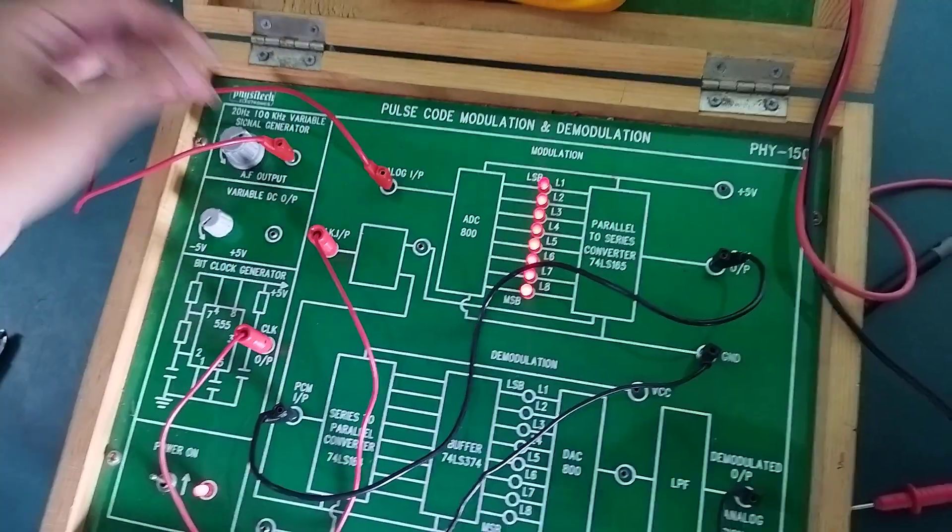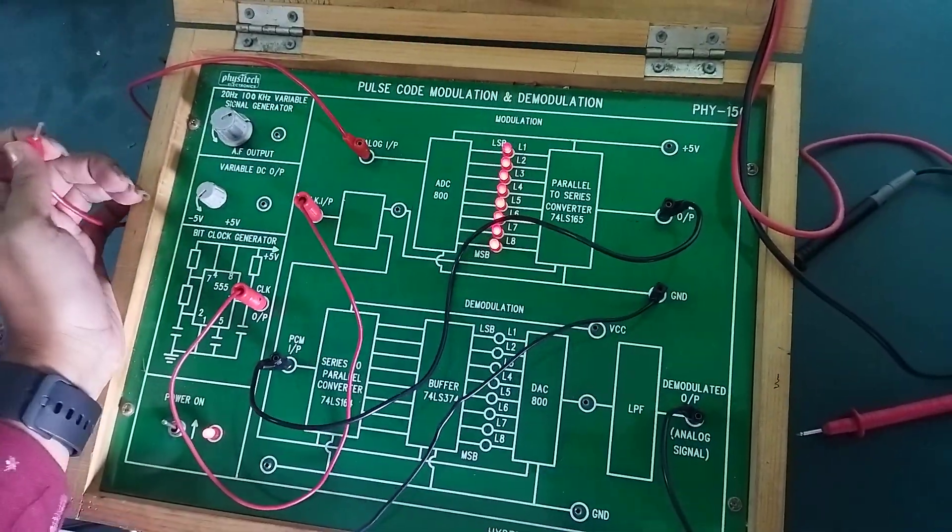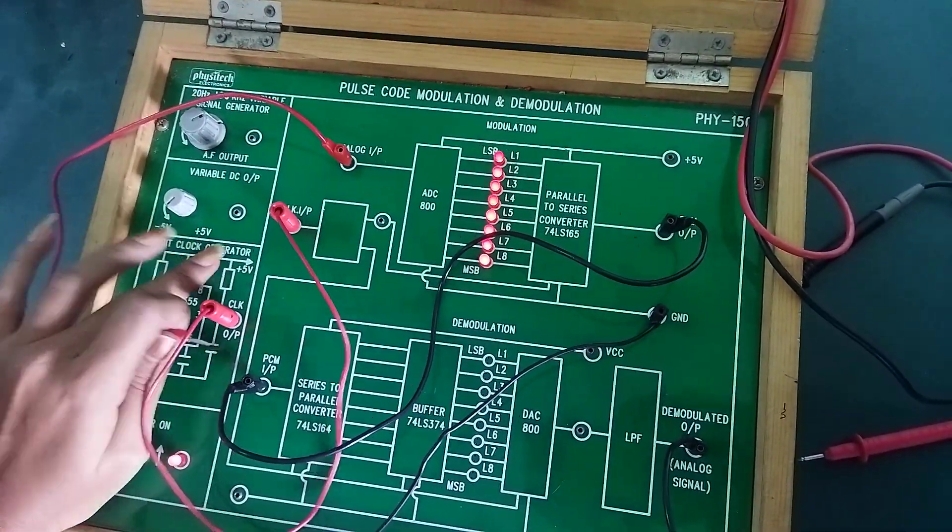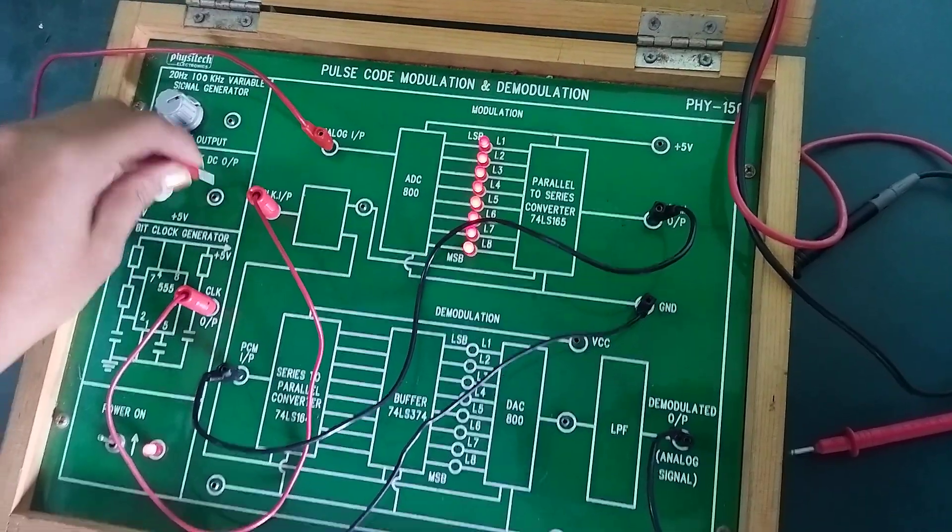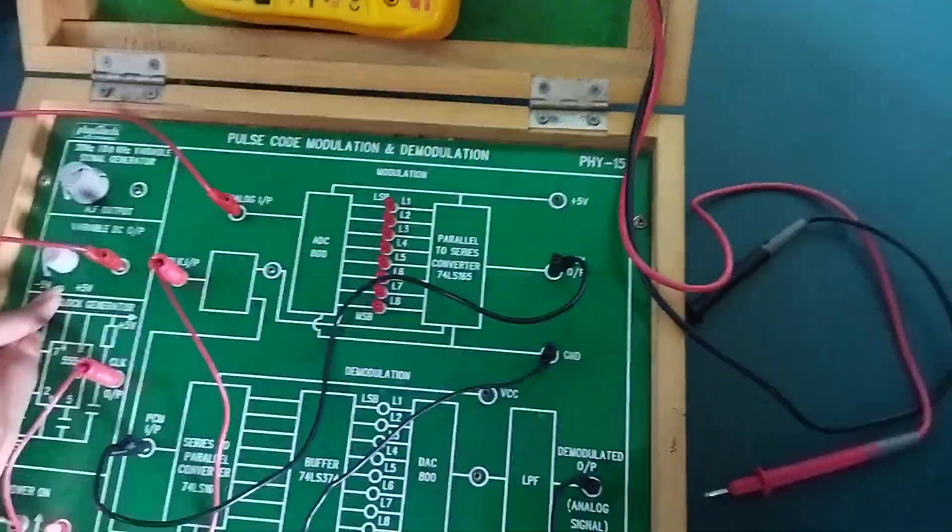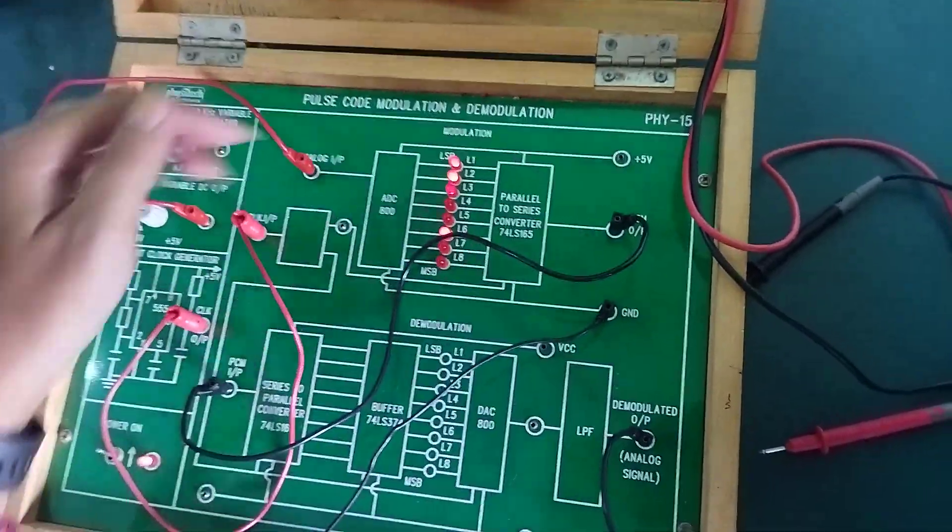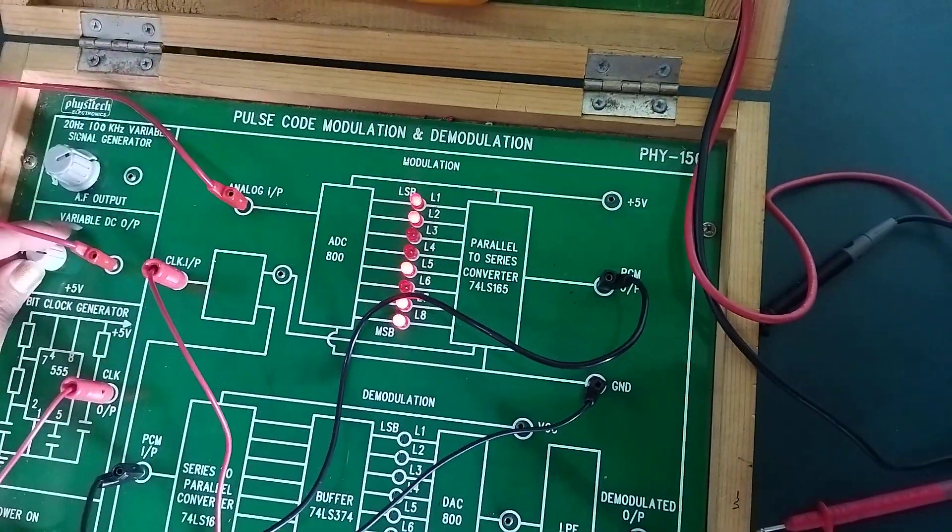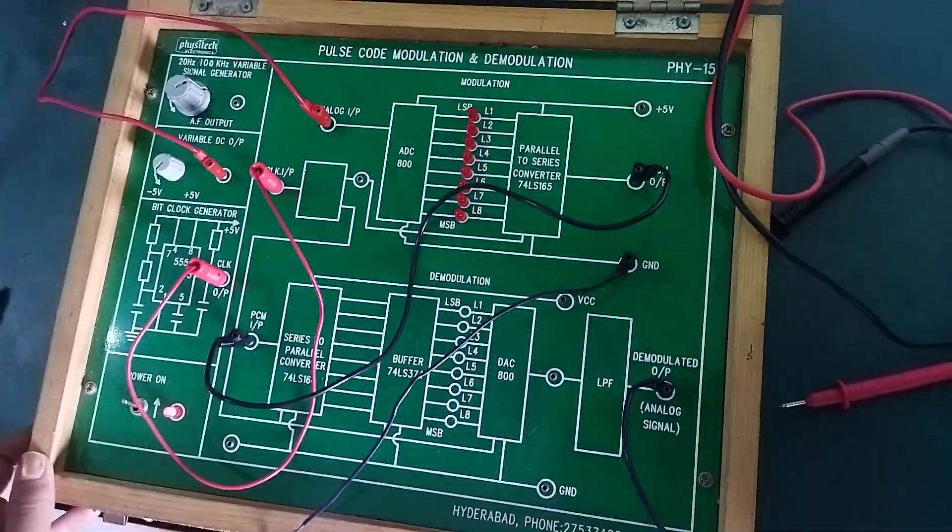The second objective is the voltage value from minus 5 to plus 5. The voltage value is the output. It is analog input. If the voltage value is equal to minus 5 to plus 5, it will show according to the bit pattern. This is the calculation.